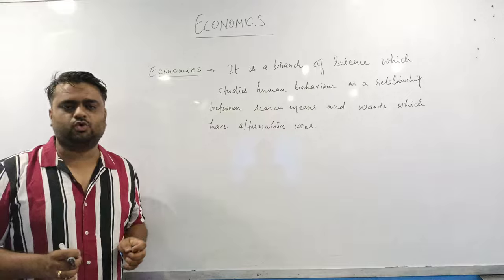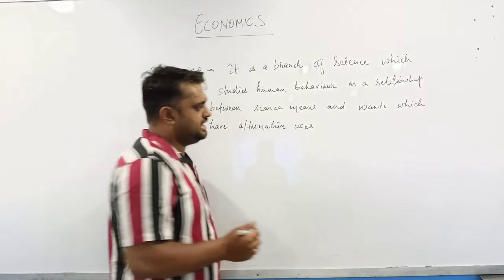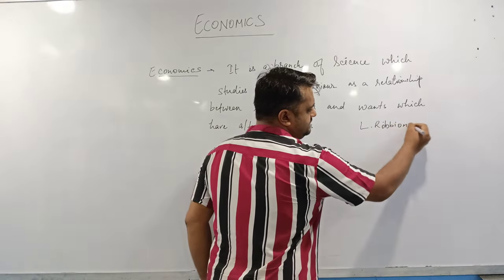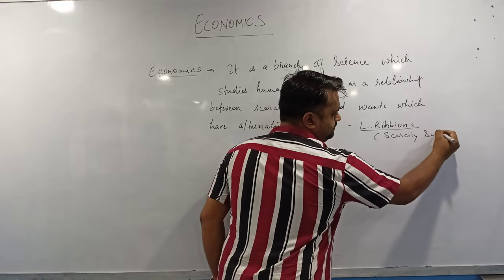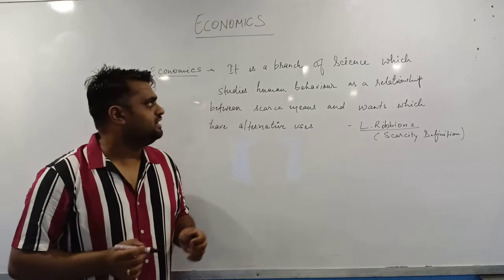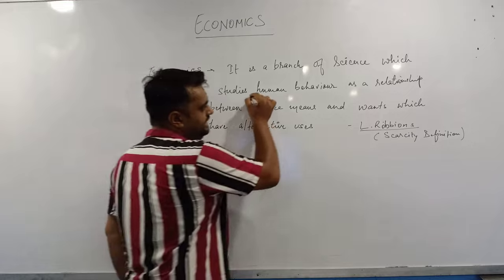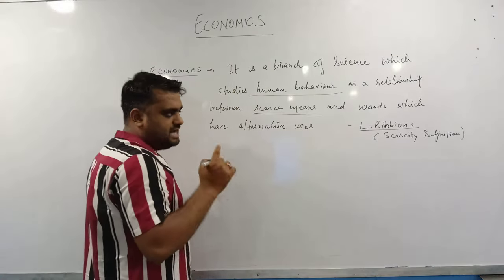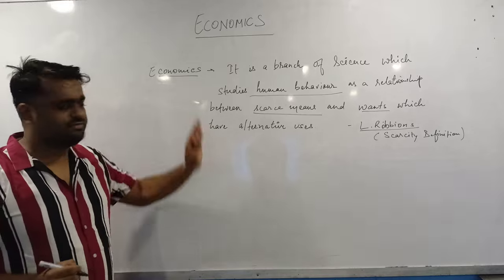So here we have to understand what is economics. Economists have different definitions of economics. The most common definition is L. Robbins' definition, which we call the scarcity definition. He is saying that economics is a branch of science which studies human behavior as a relationship between scarce means and wants which have alternative uses. So basically his definition has three things.